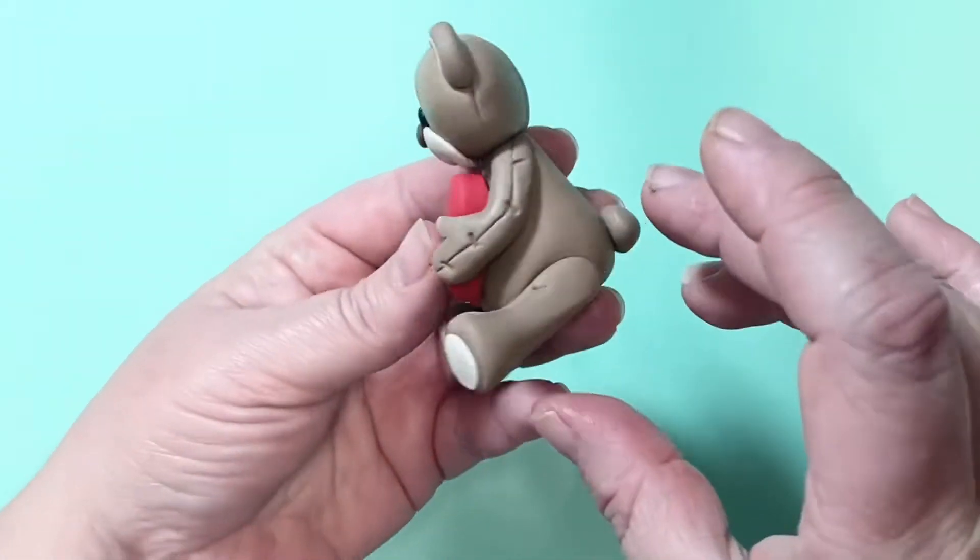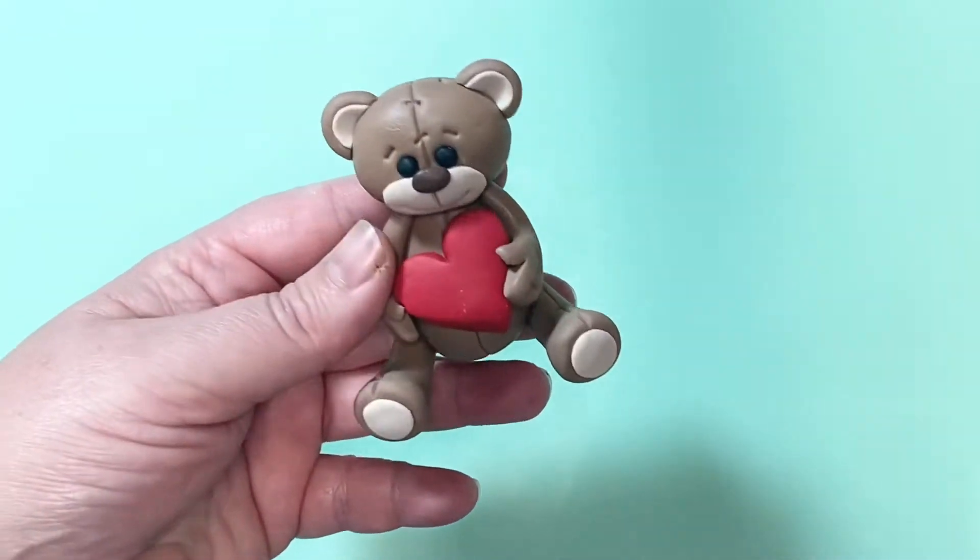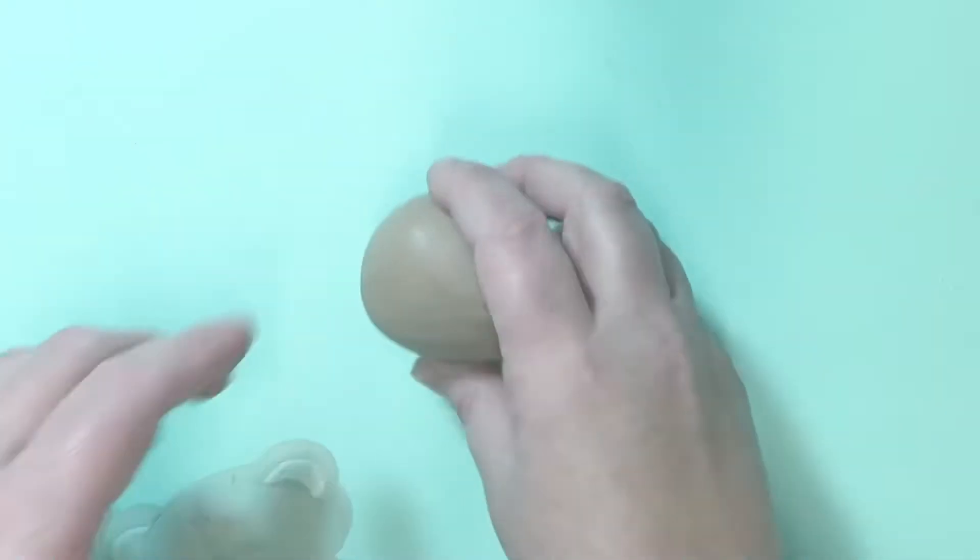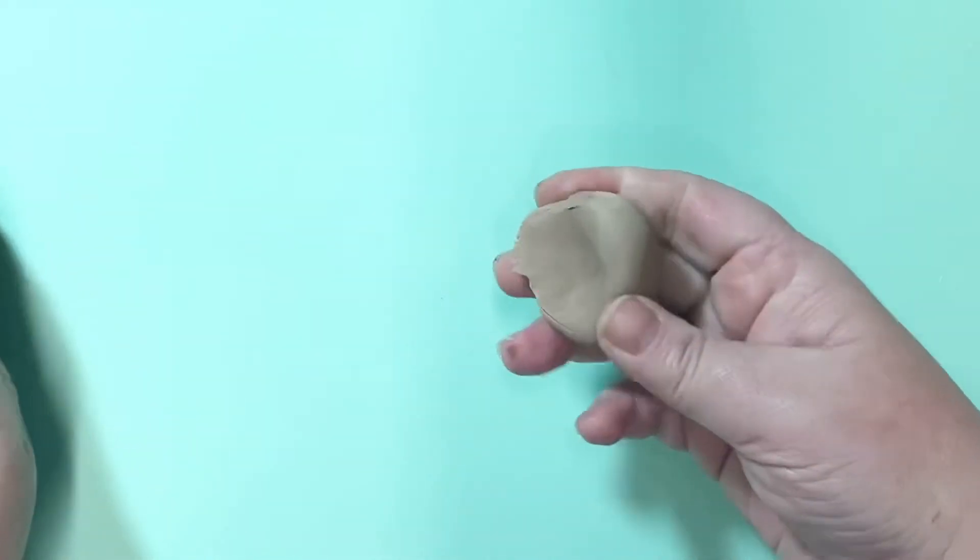Today I'm going to show you how to make a little Valentine's teddy bear which you can make to go on your cake or make it smaller to add to cupcakes. I'm using light brown Saracino modeling paste for this bear.